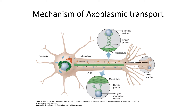This figure from Ganong's Review of Medical Physiology depicts axoplasmic transport. It shows anterograde transport from the soma to the cell terminal mediated by kinesin, and retrograde transport mediated by dynein, which is responsible for the movement of recycled membrane proteins and exogenous substances back from the cell terminal to the cell body.